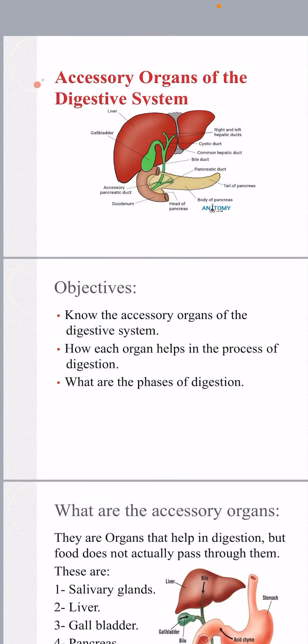Good morning everyone, and welcome to the second session this quarter. We're going to talk about the accessory organs of the digestive system. The main organs are those where food passes through, while the accessory organs are those where food does not pass through — they only help or aid in digestion through the secretion of chemical substances.